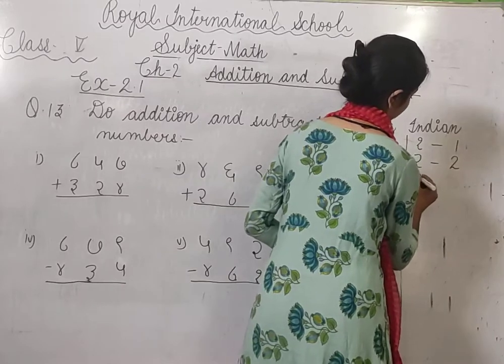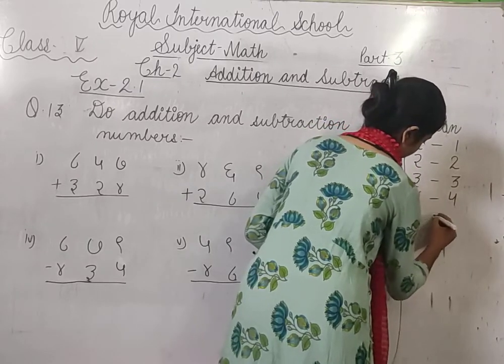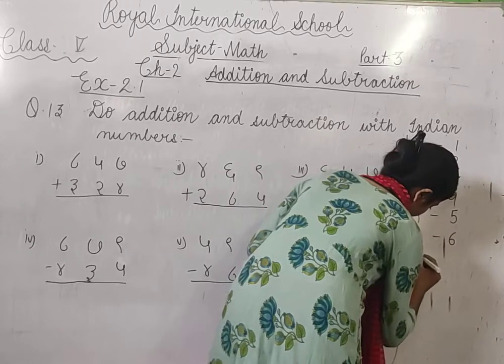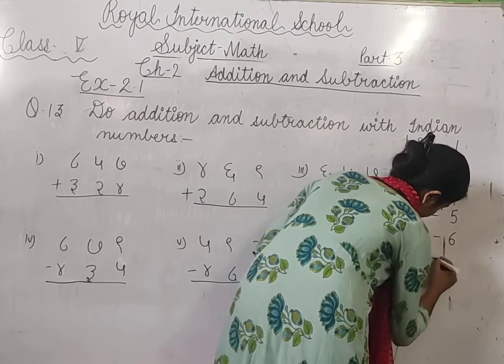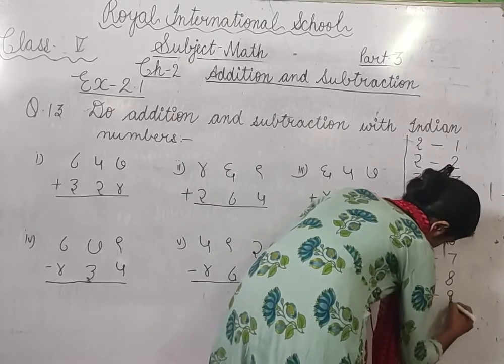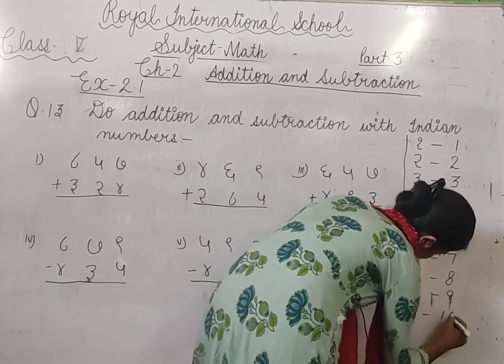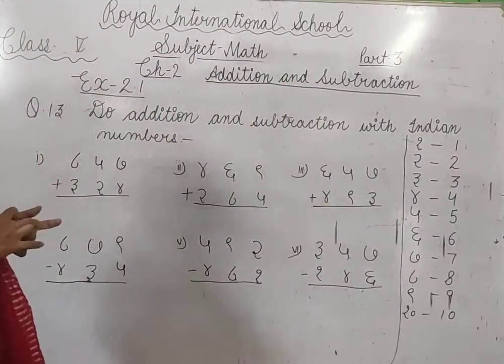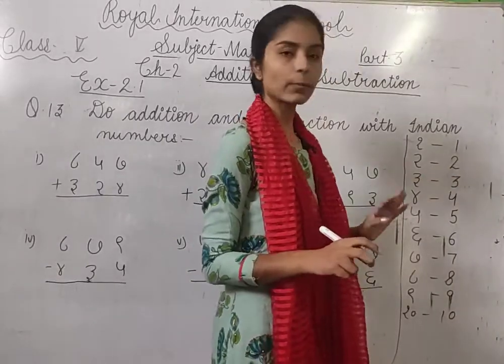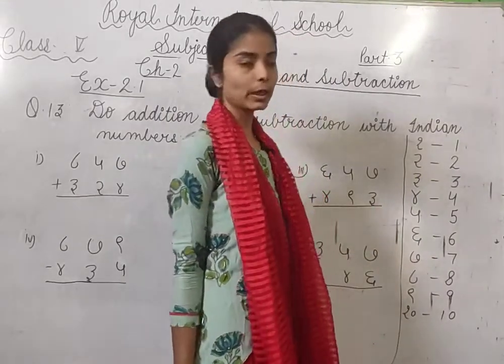1, 2, 3, 4, 5, 6, 7, 8, 9, then 10. Yeh hoti hai hamari Indian numbers, yeh counting aati hai aapko. Inke through maine isi ke samne likha hai taaki aapko verify karne mein problem na ho. 1, 2, 3, 4, 5, 6, 7, 8, 9, 10.